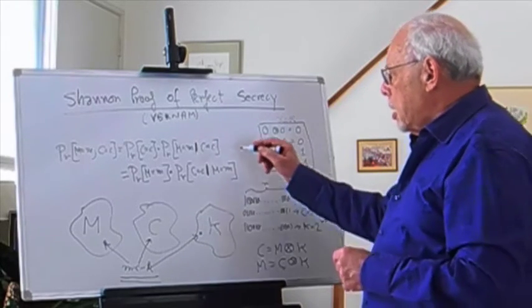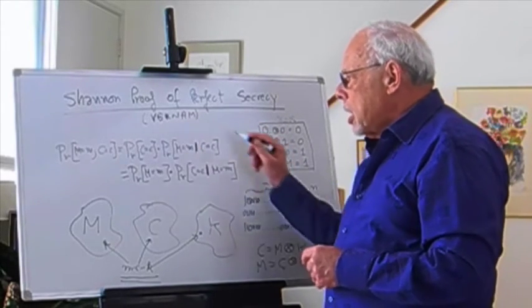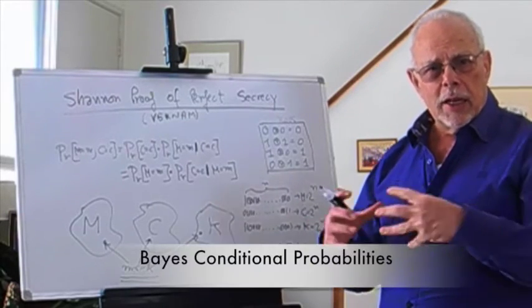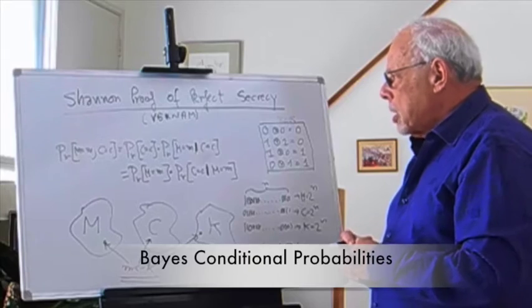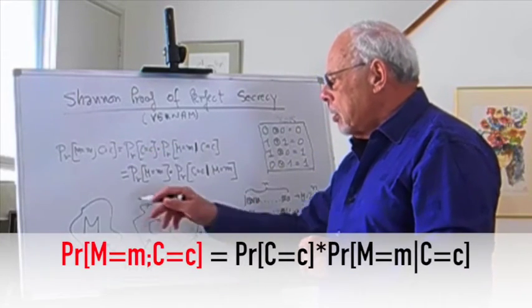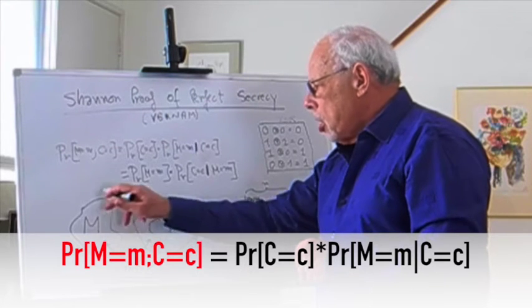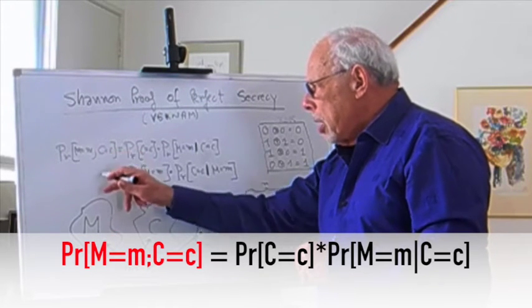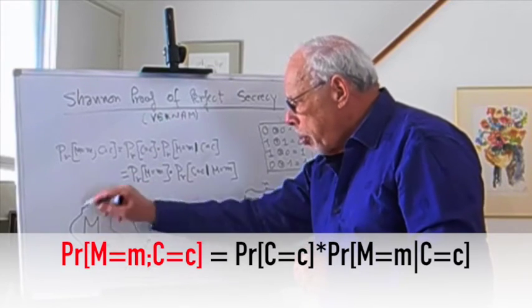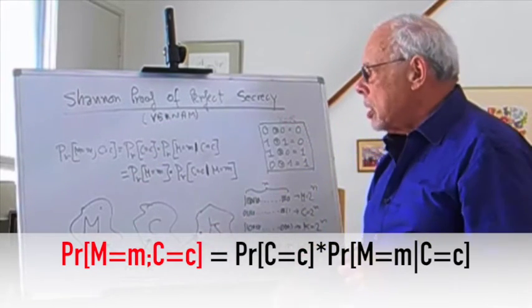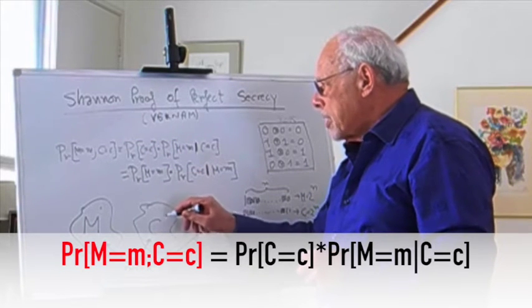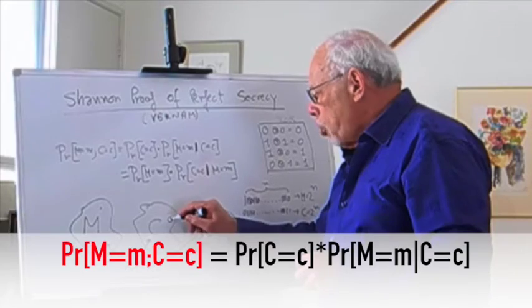Now to the proof. What Shannon did: he used what is known as the Bayes relationship, which says if you have two somewhat related events—that the message will be a particular M out of the possibility of all messages, and the probability that the ciphertext will be a smaller c out of the ciphertext space C—you can express this in two different ways.